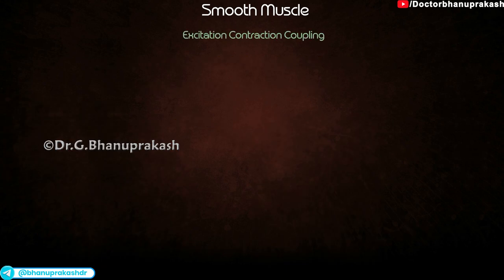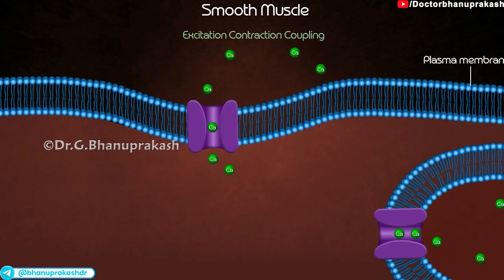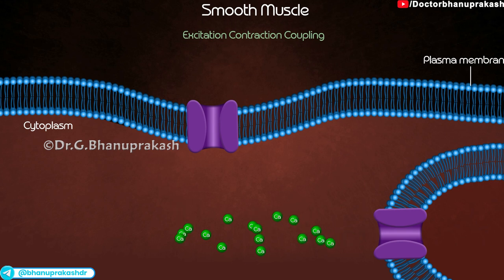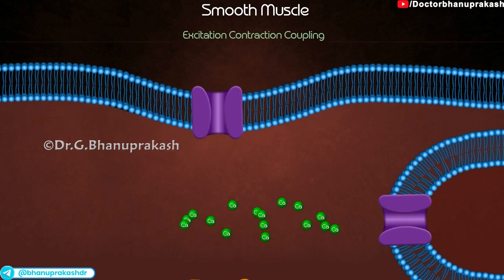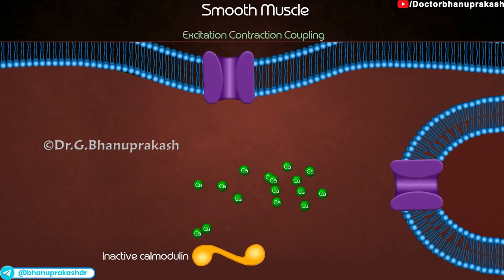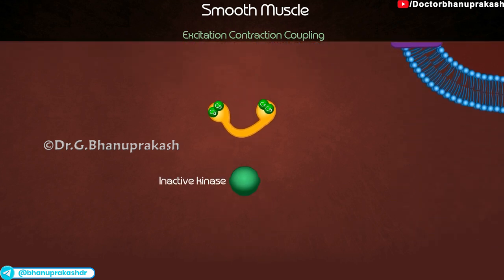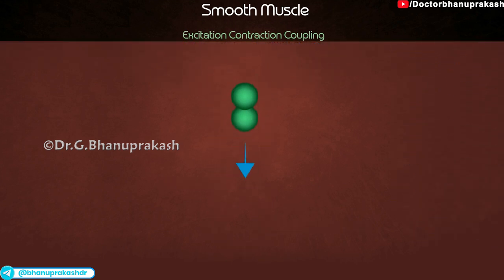Excitation-contraction coupling of smooth muscle. Calcium ions enter the cytosol from the extracellular fluid via voltage-dependent or voltage-independent calcium channels, or from the scant sarcoplasmic reticulum. Calcium binds to and activates calmodulin. Activated calmodulin then activates the myosin light chain kinase enzymes.